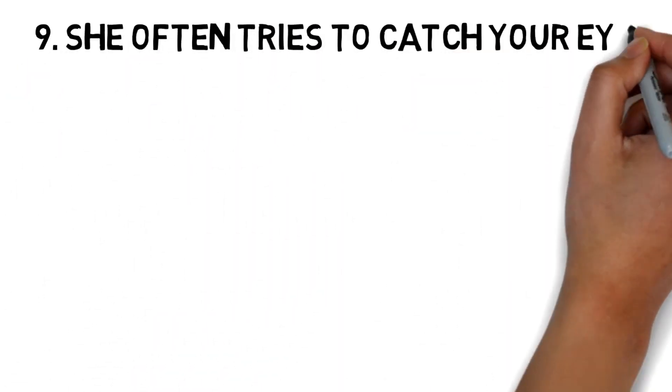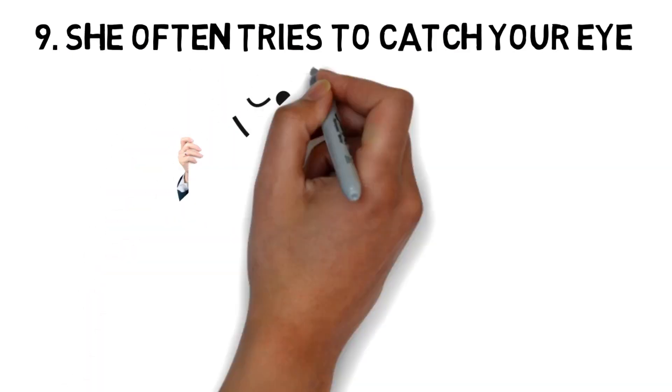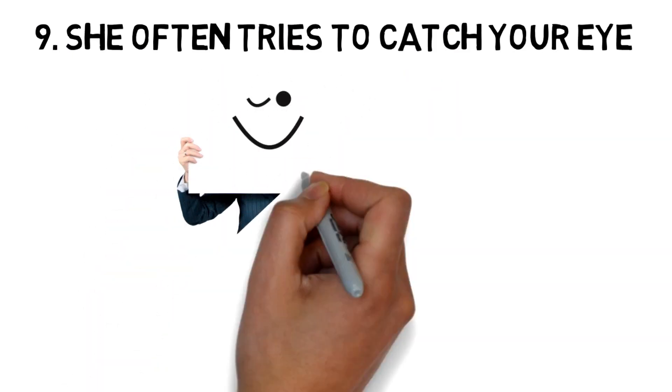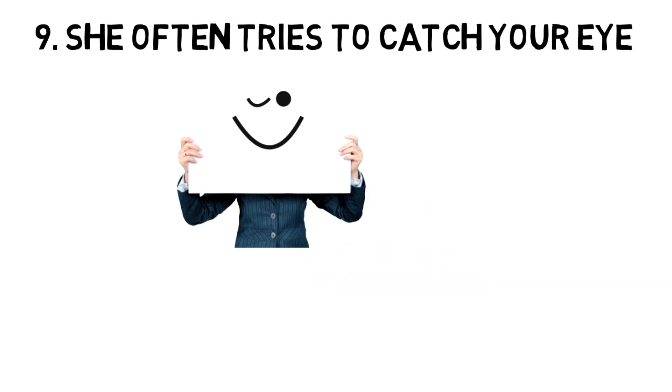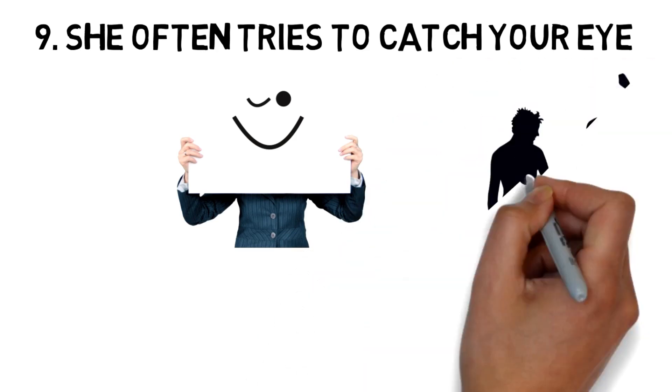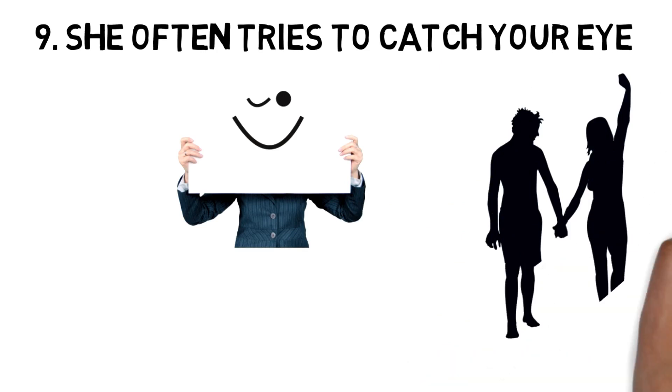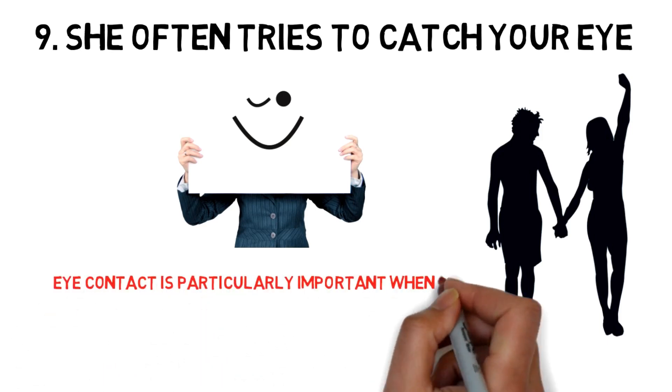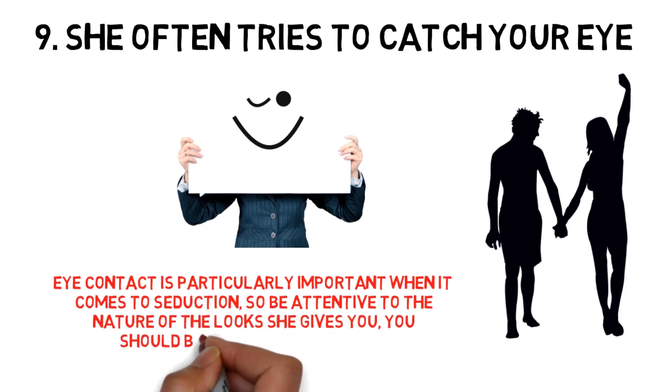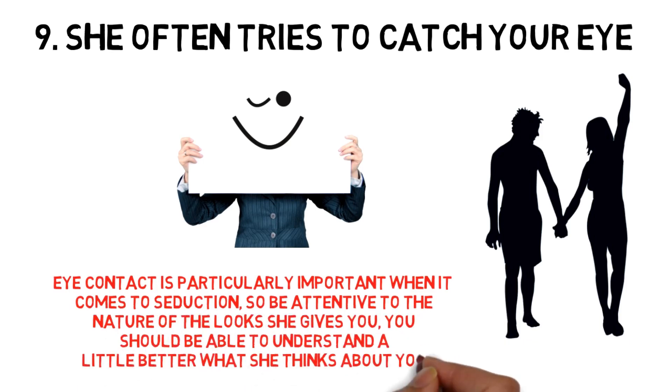9. She often tries to catch your eye. When you are with your friends or colleagues, you have noticed that she tries to catch your eye. Sometimes when you don't notice it, she observes you. She seems lost in her thoughts. And when your eyes meet, if she holds her gaze for a while, she always ends up lowering it. This is enough evidence to expose a woman who has fallen in love. Eye contact is particularly important when it comes to seduction. So be attentive to the nature of the look she gives you. You should be able to understand a little better what she thinks about you.